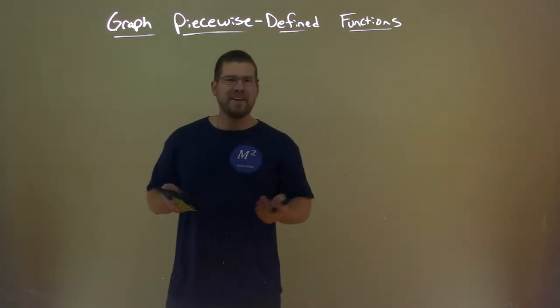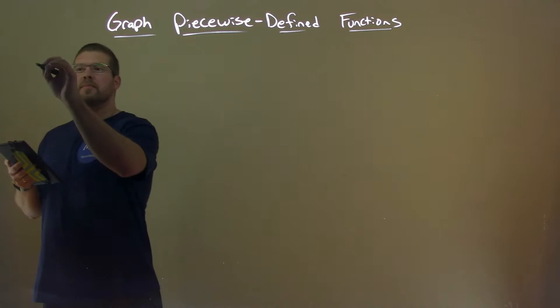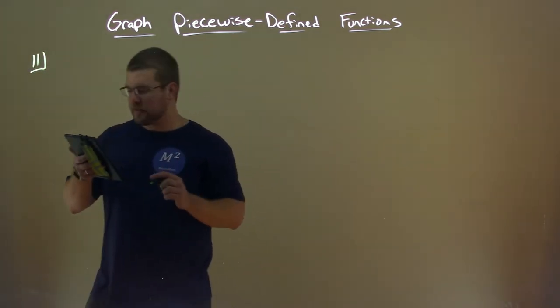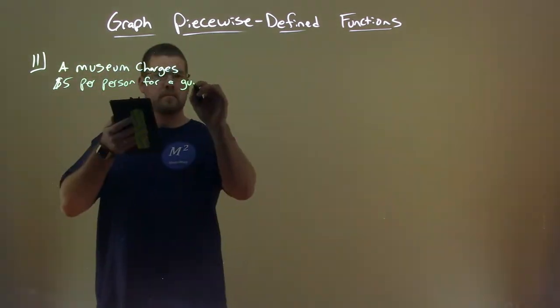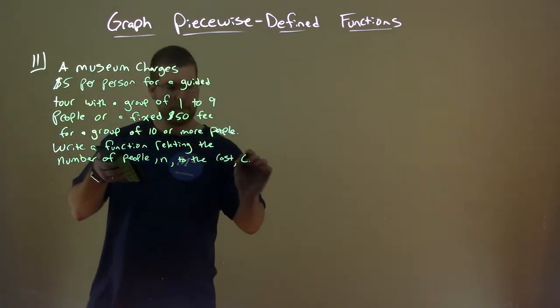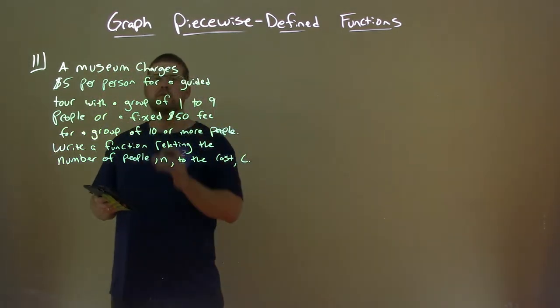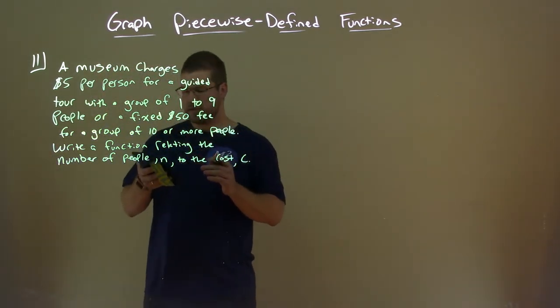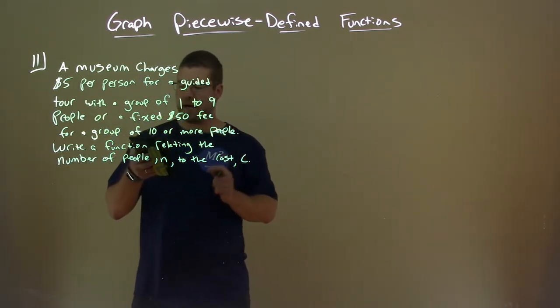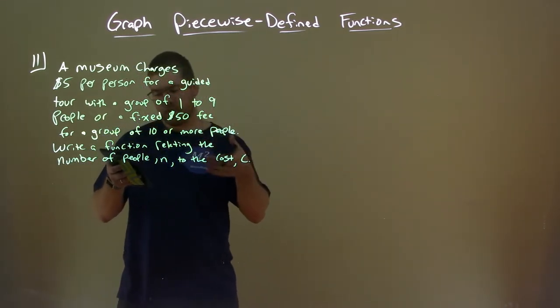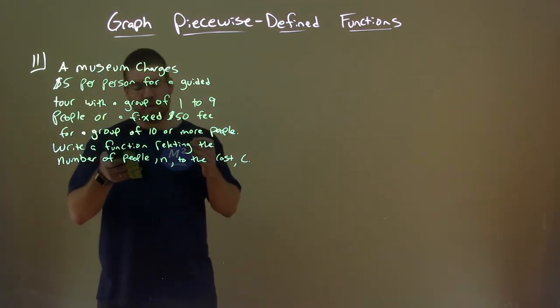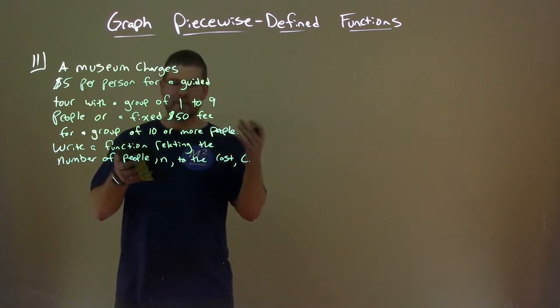Okay, so let's dive into our first example. A museum charges $5 per person for a guided tour with a group of 1 to 9 people, or a fixed $50 fee for a group of 10 or more people. Write a function relating the number of people, n, to the cost, c.